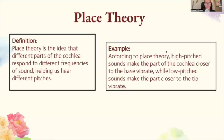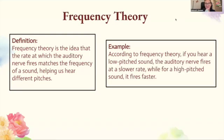Place theory is the idea that different parts of the cochlea respond to different frequencies of sound, helping us hear different pitches. According to place theory, high-pitched sounds make the part of the cochlea closer to the base vibrate, while low-pitched sounds make the part closer to the tip vibrate. Frequency theory is the idea that the rate at which the auditory nerves fire matches the frequency of a sound, helping us hear different pitches. According to frequency theory, a low-pitched sound causes the auditory nerves to fire at a slower rate, while a high-pitched sound fires at a faster rate.